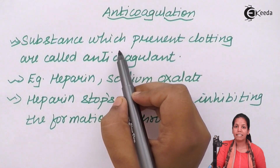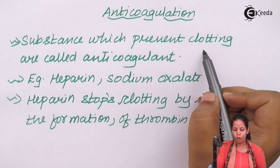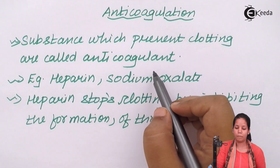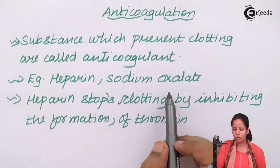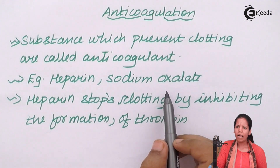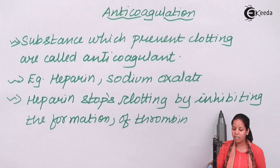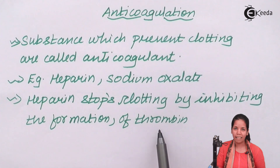The substances that prevent the clotting mechanism inside the body are termed anticoagulants. One common example is heparin, and another is sodium oxalate. Heparin stops the clotting mechanism by inhibiting the formation of thrombin.